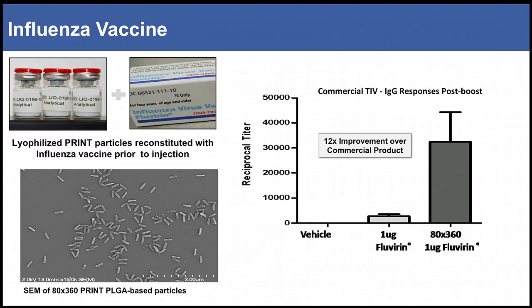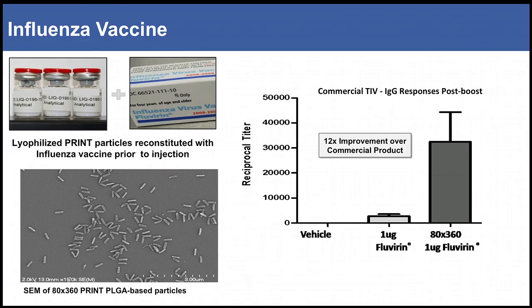This is actually our first product put into the clinic by our team at Liquidia, which was spun out of my laboratory. These particles are made out of the same material as a bioabsorbable suture combined with the same influenza vaccine that you and I all get. Within just a few minutes, 90% of these molecules absorb on the surface of these particles. When we do that, we get about a 12-fold increase in immune response — a more effective delivery of these biologics to the immune system.